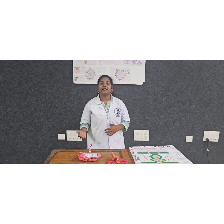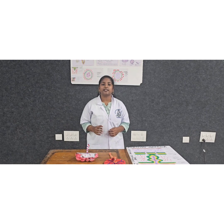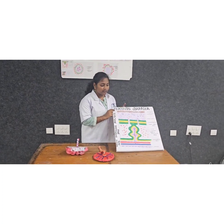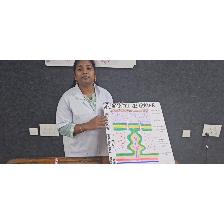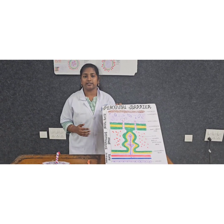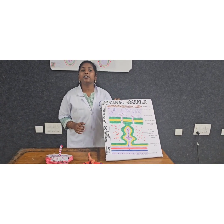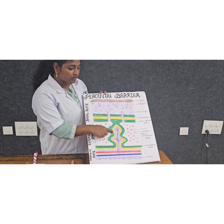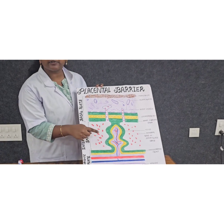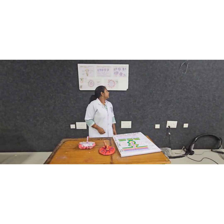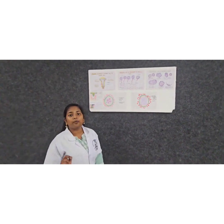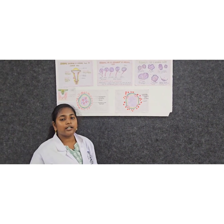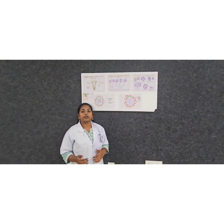In humans, the maternal blood and the fetal blood are separated by chorionic tissue; hence, the human placenta is also called hemochorial placenta. It consists of a placental membrane, also called the placental barrier, which separates maternal and fetal blood. Across this membrane, exchange of gases, nutrients, and waste products takes place. The placental barrier is made up of five layers from maternal side to fetal side: syncytiotrophoblast, cytotrophoblast, basement membrane of cytotrophoblast, mesoderm, and endothelium with the basement membrane of fetal capillaries. In early pregnancy the membrane is 0.025 mm thick, but in later stages it becomes 0.002 mm thick to meet the growing nutrient demands of the fetus.